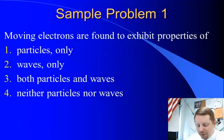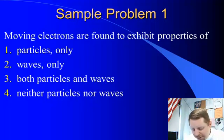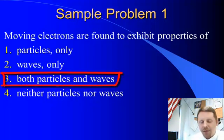So a sample problem, moving electrons are found to exhibit properties of particles, waves, both particles and waves, or neither particles nor waves. Because they're moving particles, they exhibit properties of both waves and particles. So the correct answer here must be three.